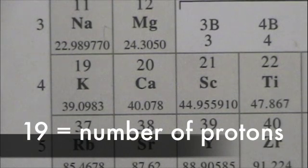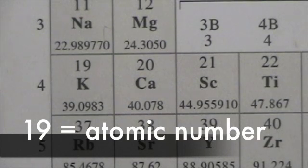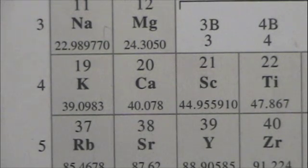The number 19 is how many protons it has. It's also called the atomic number, because how many protons it has is what defines it as the element potassium. All potassiums have 19 protons. If they had 20, they would be calcium. But they don't. They have 19. So potassium.